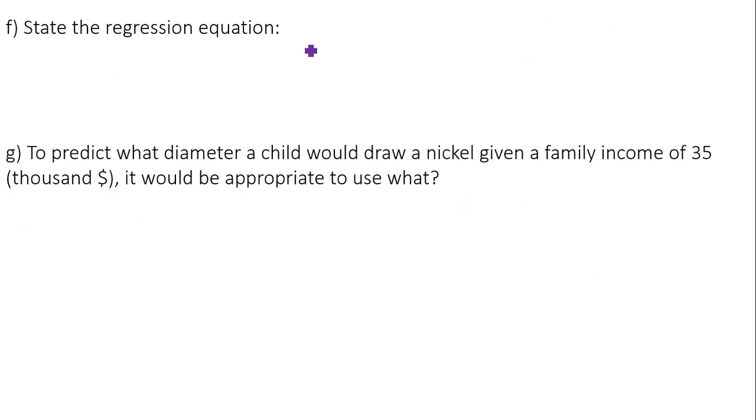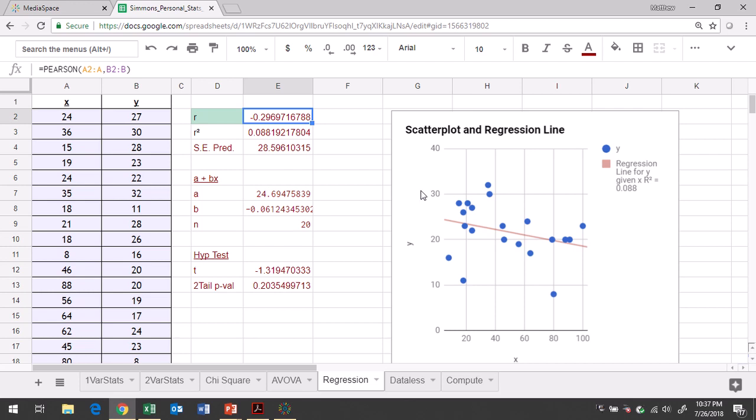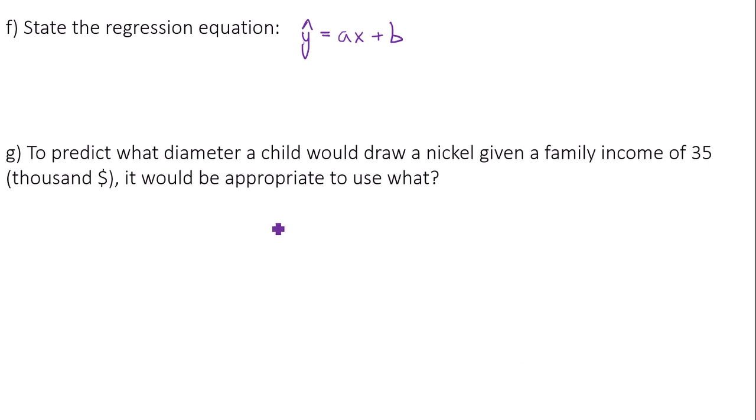Now let's find the regression equation for this data. We get ŷ equals ax plus b. That is the general format for a linear regression equation. A and B are given to you in Google Sheets. A is about 24.69, B is about negative 0.06. So let's just fill that in. ŷ equals negative 0.06x plus 24.69.